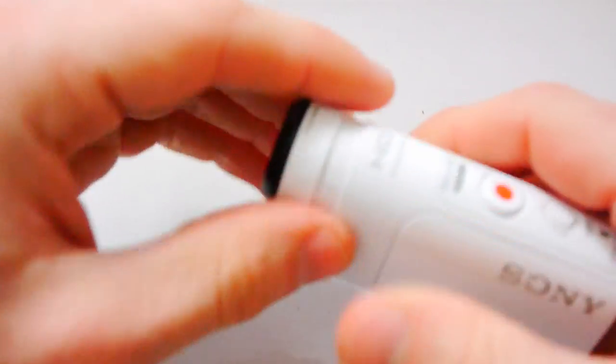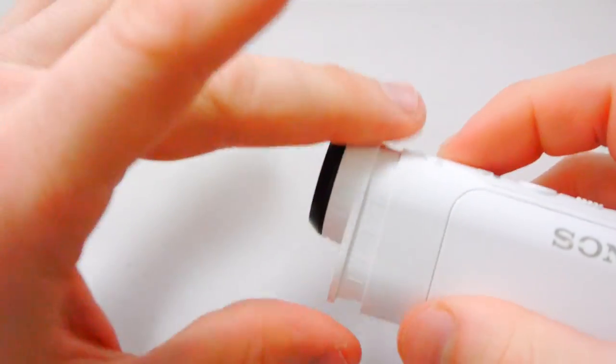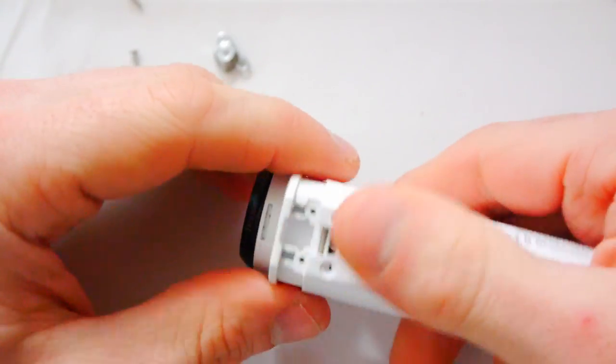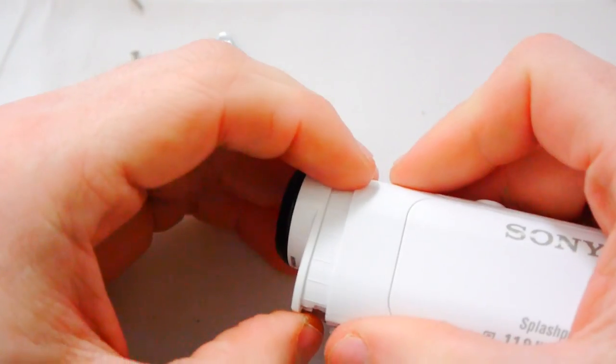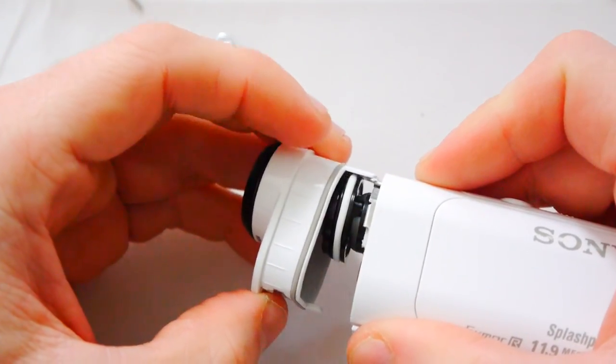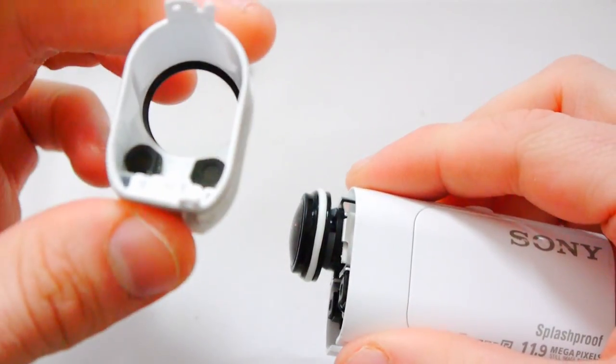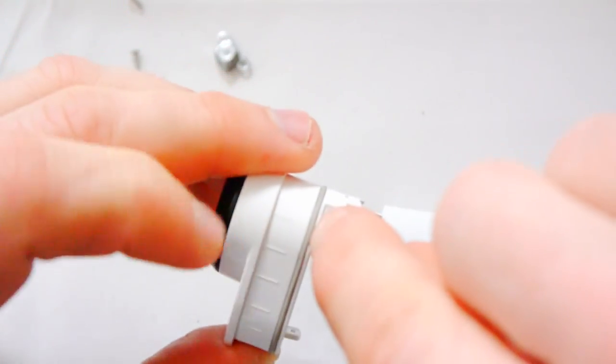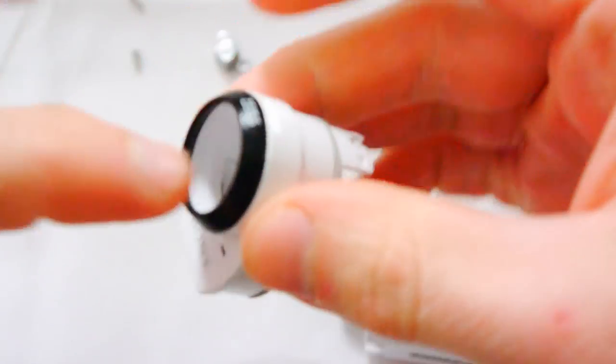And again, like I said earlier, the other models of the Sony action camera are much easier. It's just this action cam mini that's a real pain. So once you get all that, it comes off like that. And you can see there's a little kind of dark gray elastic band around there. The Zeiss branding is on the front there. And this is it.